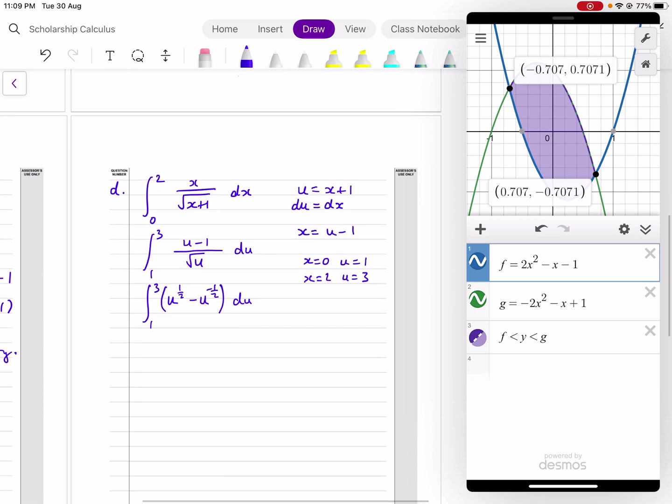And then I can anti-diff that. u to the 3 over 2 divided by 3 over 2 is the same as times by 2 thirds. Minus 1 half goes to positive 1 half. When I add 1 to it, divide by 1 half is the same as times by 2. 3 and 1. Then if I sub in 3, then sub in 1, find the subtraction, or find the difference, I get 4 thirds.